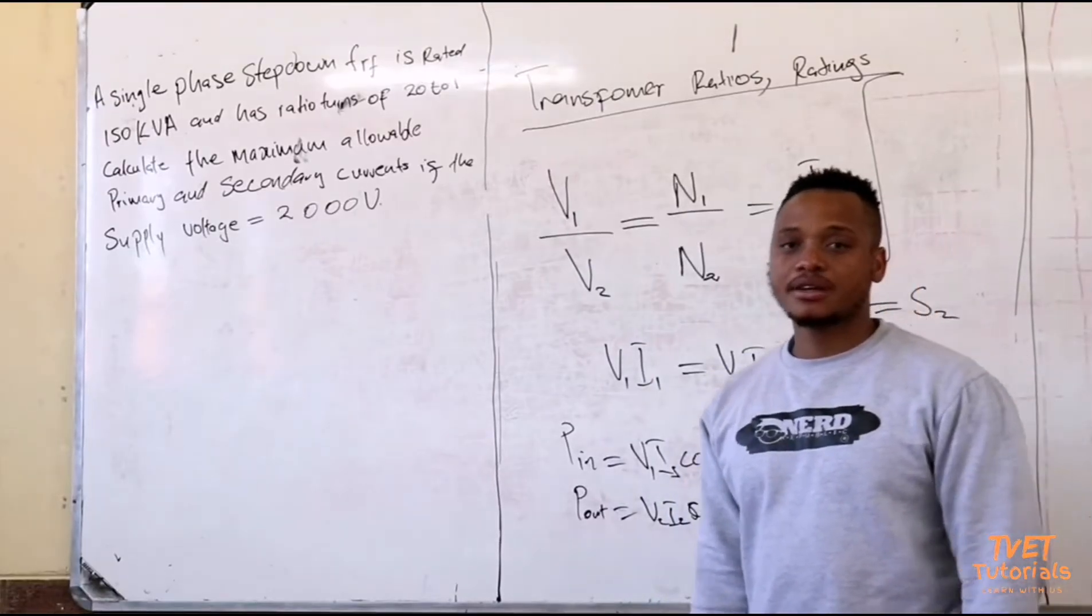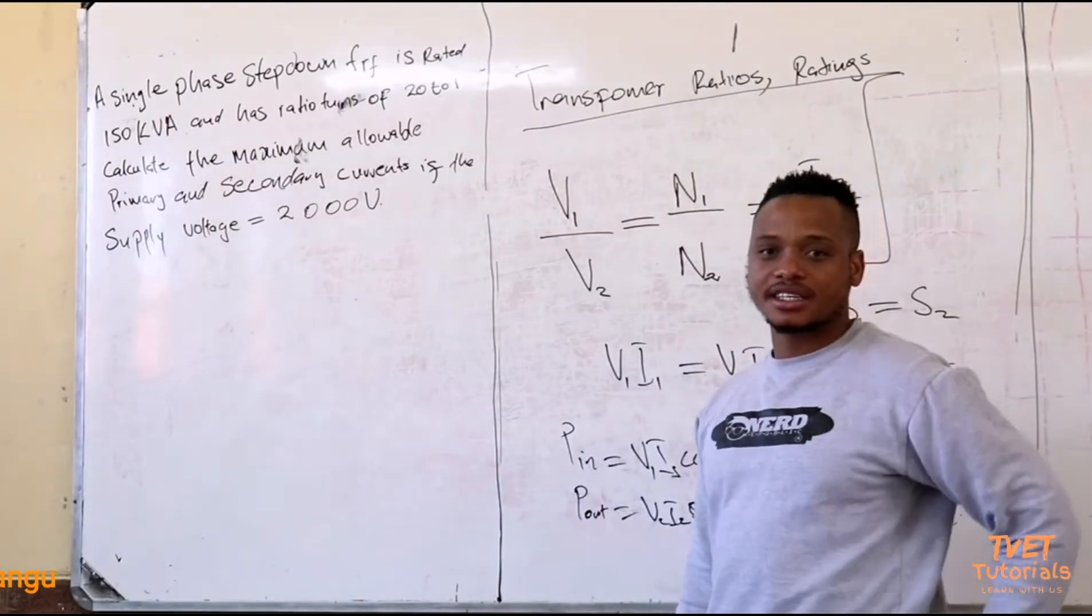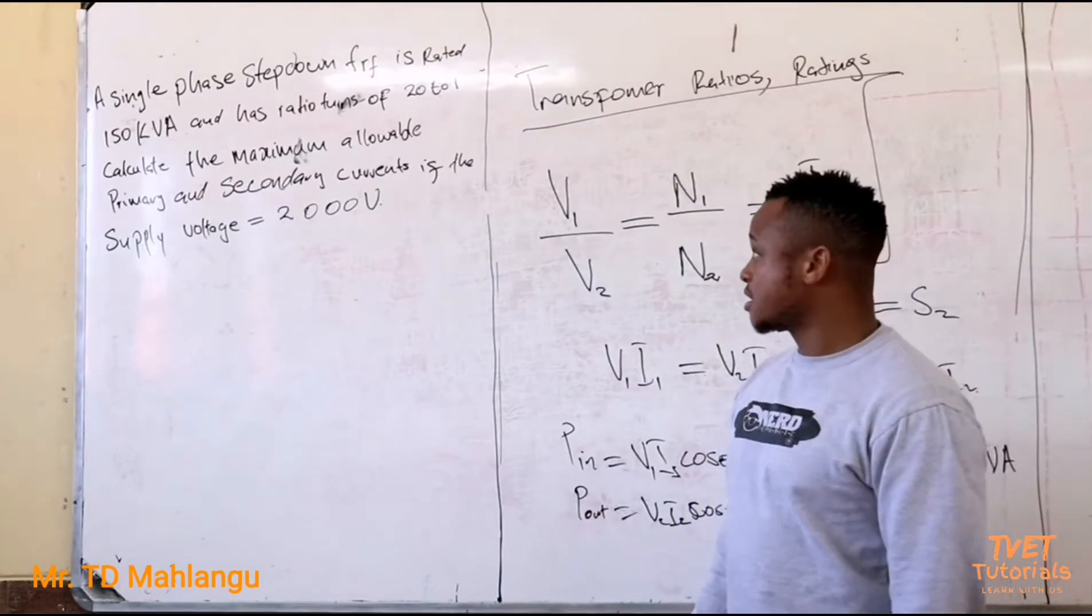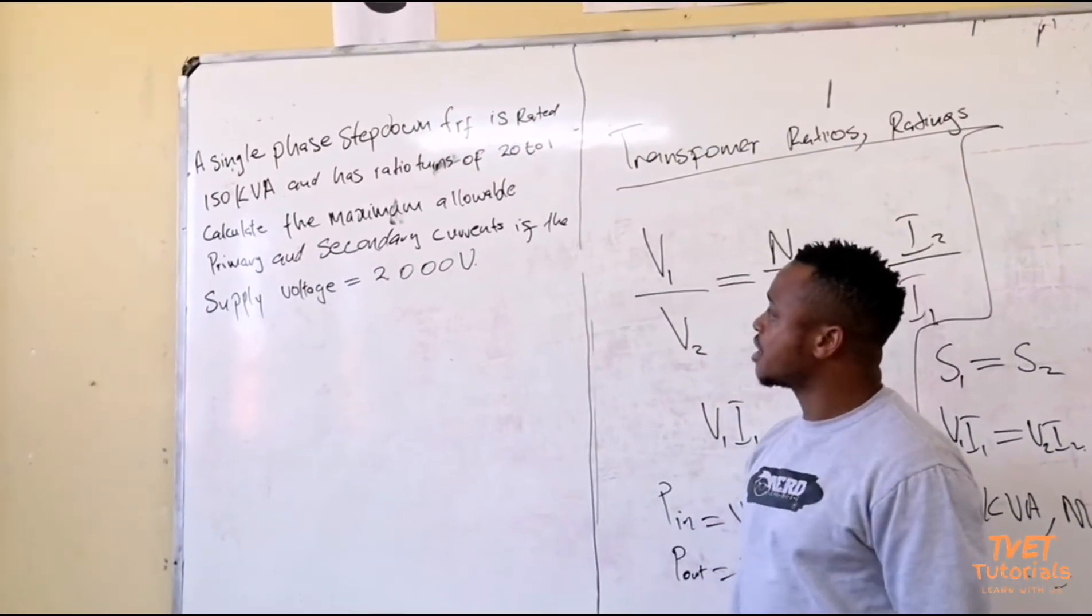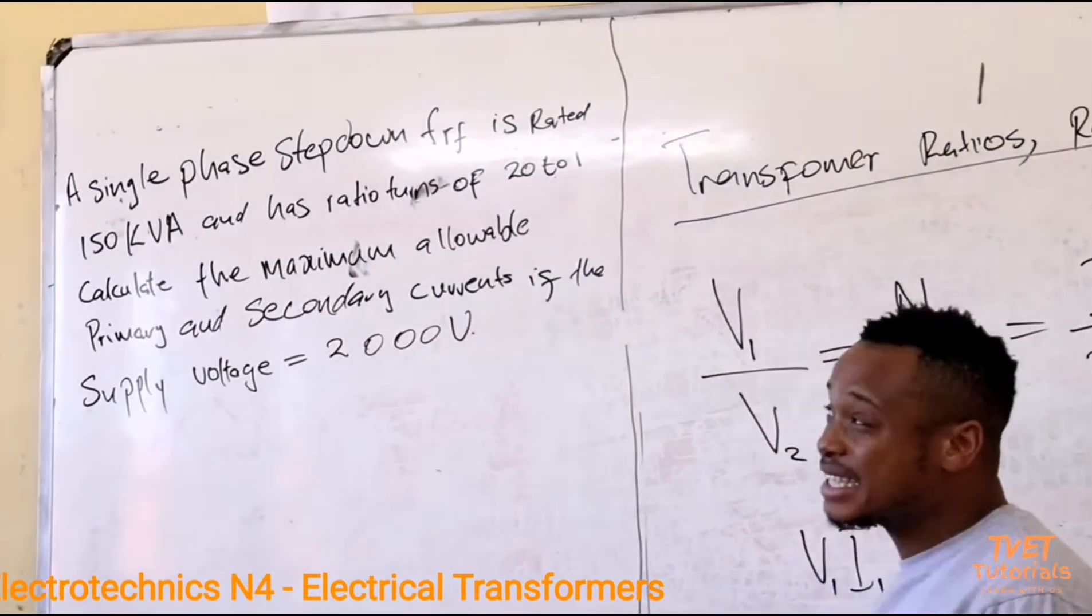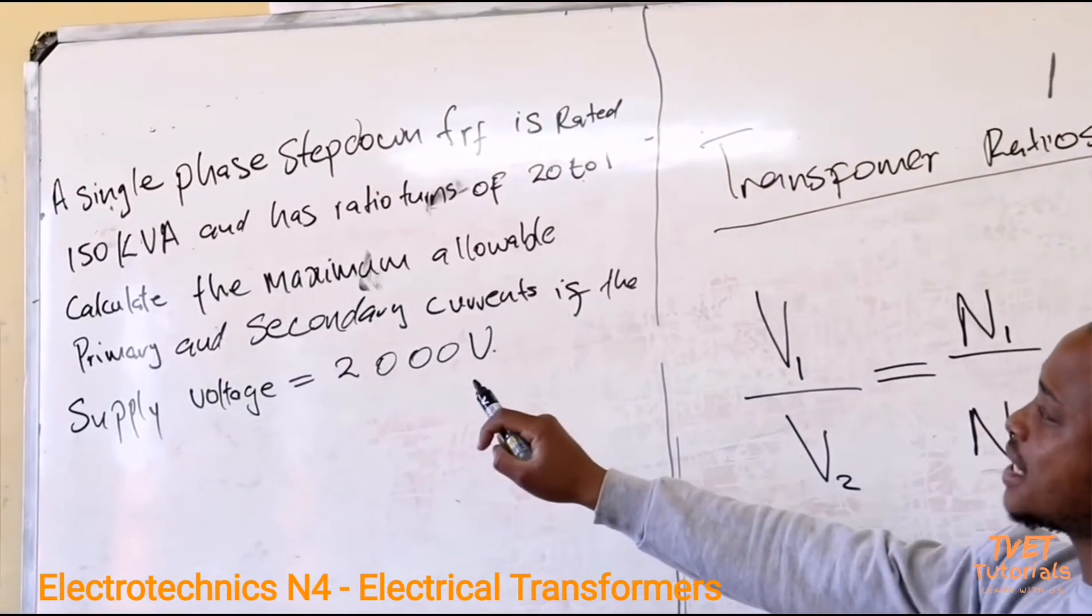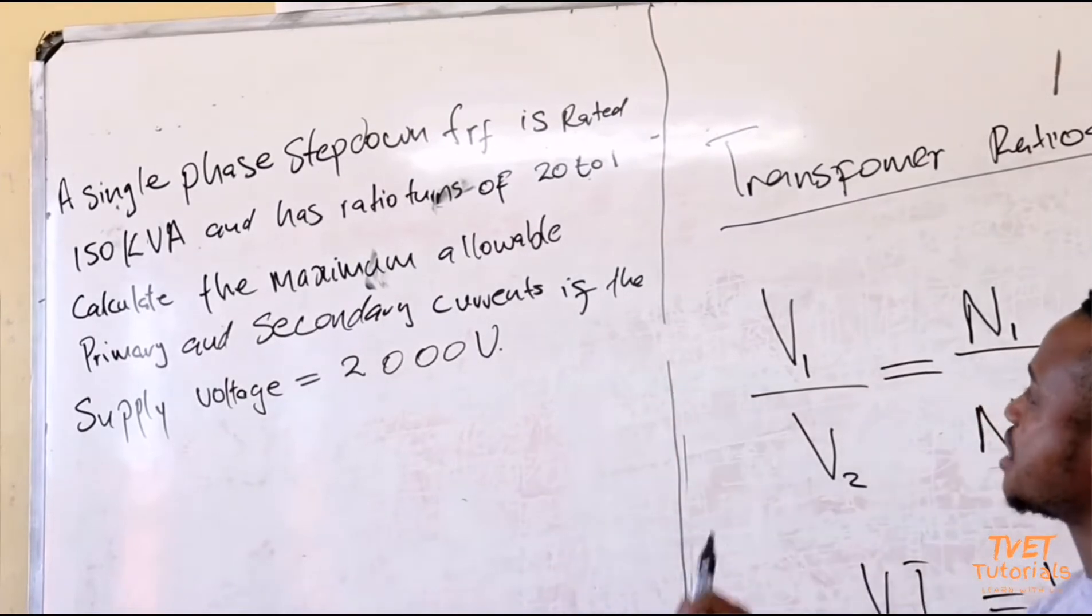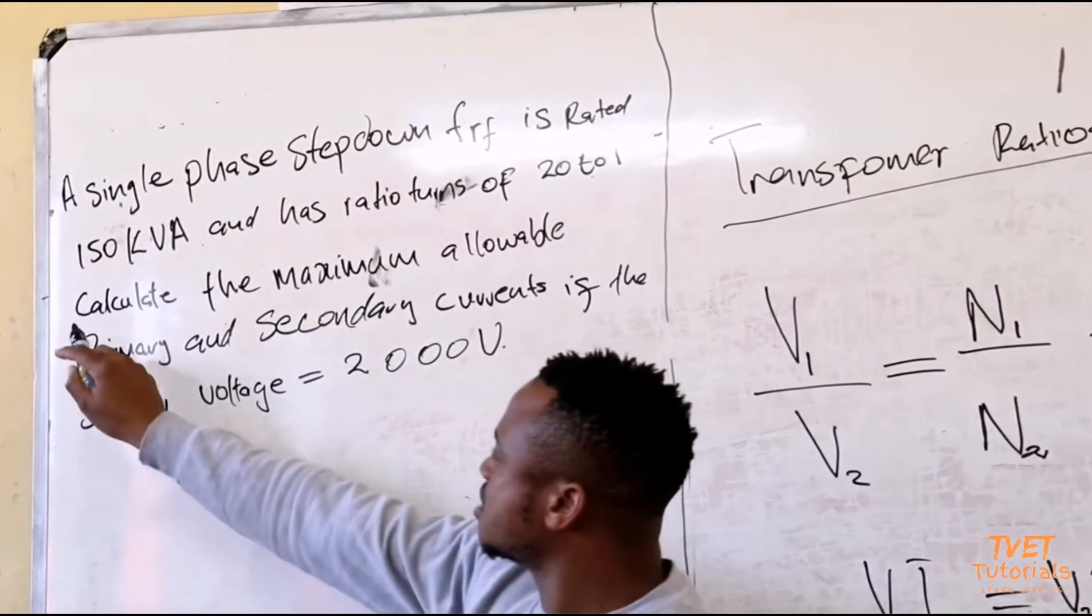Welcome back, let's look at the example on the ratings and transformation ratios. We have an example here taken from an old question paper. A single phase step down transformer is rated 150 kVA and has ratio of 20 is to 1.